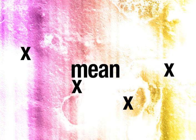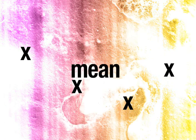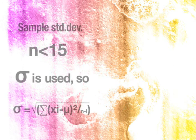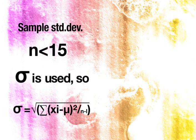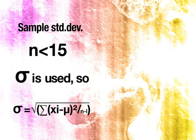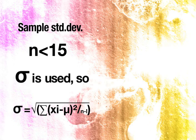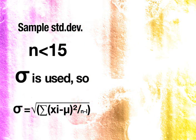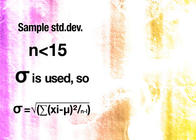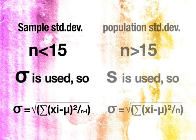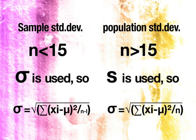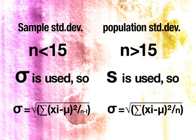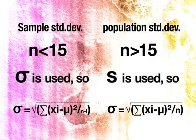In chemistry, there are two different ways of calculating standard deviation, depending on the number of observations, n, that are involved. As a rule of thumb, in forensic analysis, we use n less than 15 for sample standard deviation, and for the population standard deviation, n is greater than 15, where xi is the sum of each value and mu is the mean.